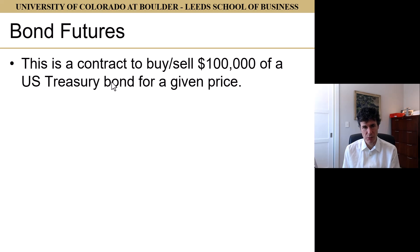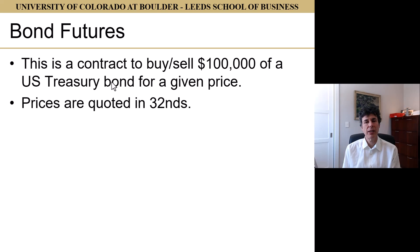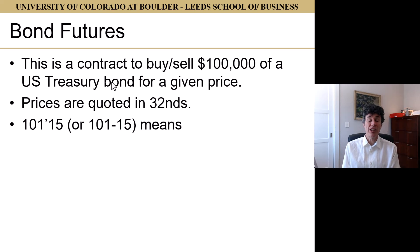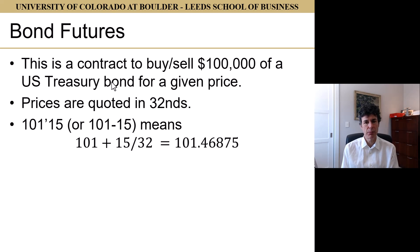Let's walk through what these details really mean. The contract is to buy or sell $100,000 of a U.S. Treasury bond for a given price — again, the 2- and 3-year note futures are $200,000. Prices are quoted in 32nds, and a price of 101-15, sometimes written 101 dash 15, means 101 plus 15/32nds, or 101.46875.